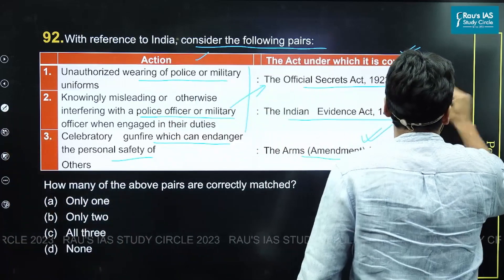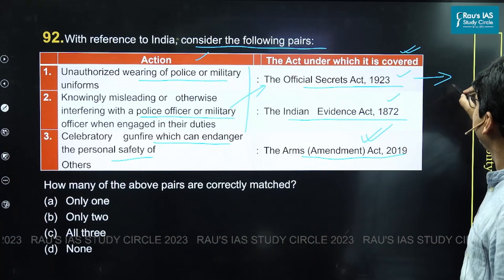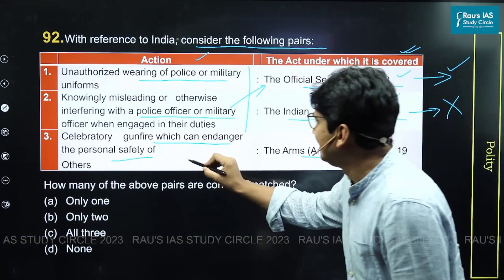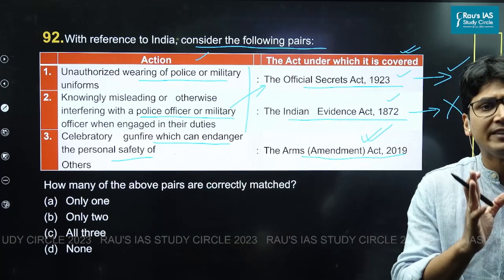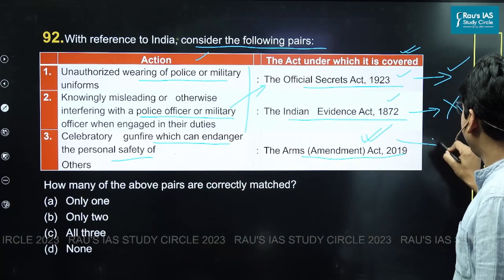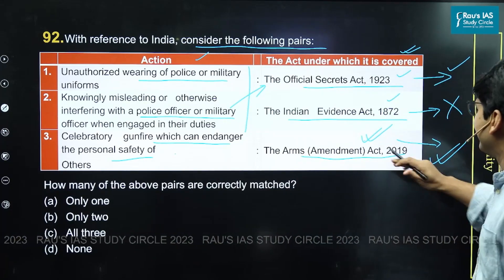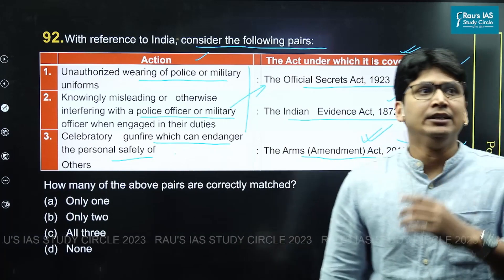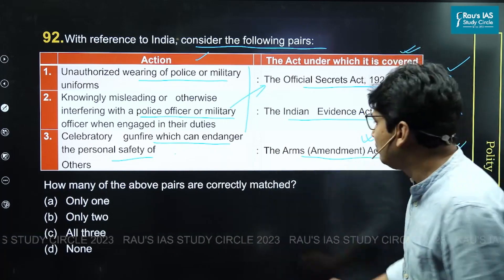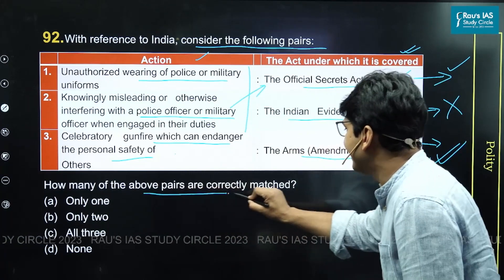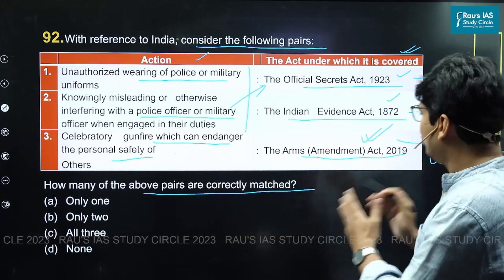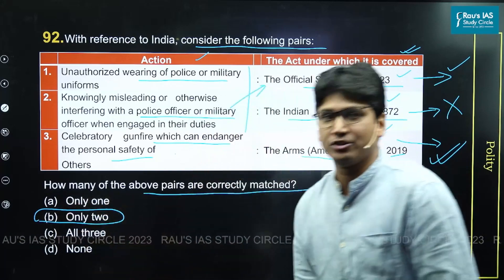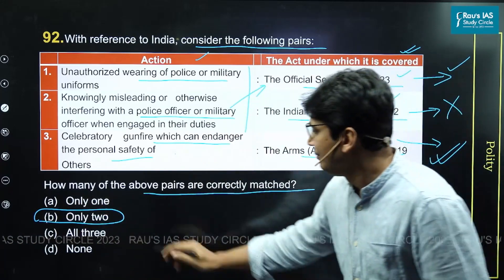Therefore, the first pair is correct, but the second pair is incorrect since it wrongly attributes interference with officers to the Indian Evidence Act rather than the Official Secrets Act. The third pair — celebratory gunfire under the Arms Amendment Act of 2019 — is correct. So only two pairs are correctly matched, making the correct answer option B.